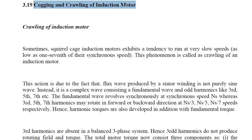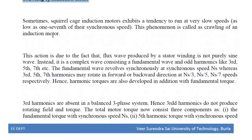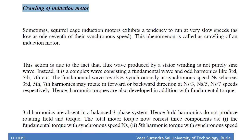Now we discuss cogging and crawling effects in the induction motor. First, the crawling effect: sometimes the squirrel cage induction motor exhibits a tendency to run at a very slow speed, as low as 1/7th of its synchronous speed NS. This phenomenon is called crawling of an induction motor — the motor runs at a very low speed instead of accelerating to its normal synchronous speed.